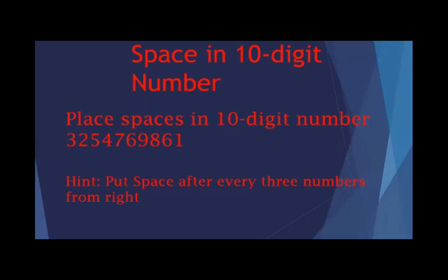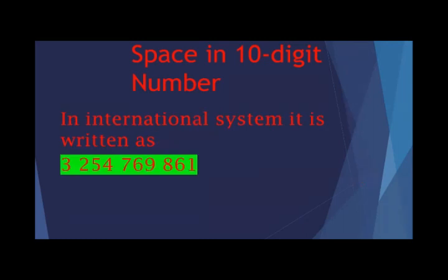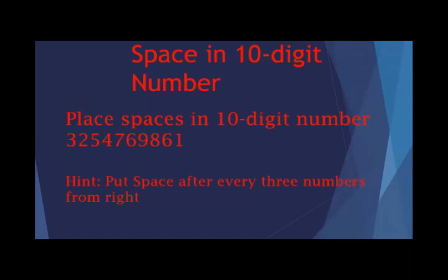Now let's place spaces in a given ten-digit number. For placing spaces there is a simple rule: place a space after every three digits from the right. Starting from the right, count 1, 2, 3 — place a space after the 8. Then count 9, 6, 7 — place a space before the 7. Then count 4, 5, 2 — place a space before the 2.